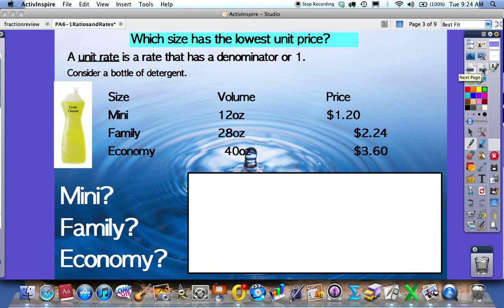When we look at different quantities, we want to look at a unit rate. A unit rate is something that has a denominator of 1. So we want the denominator to be 1.